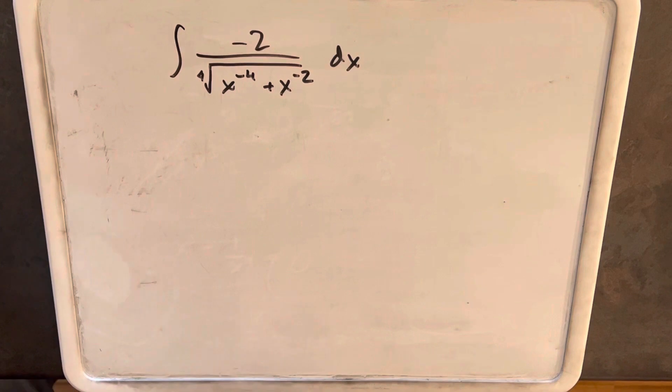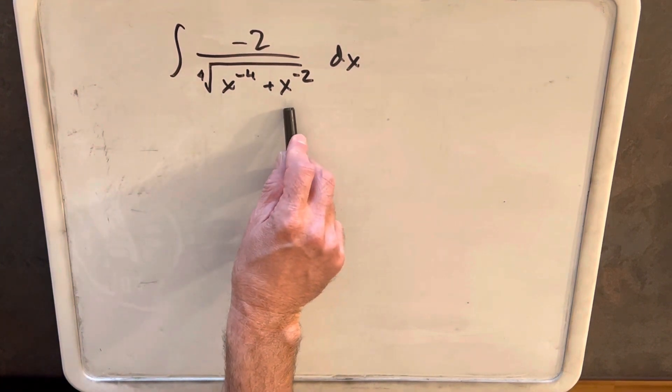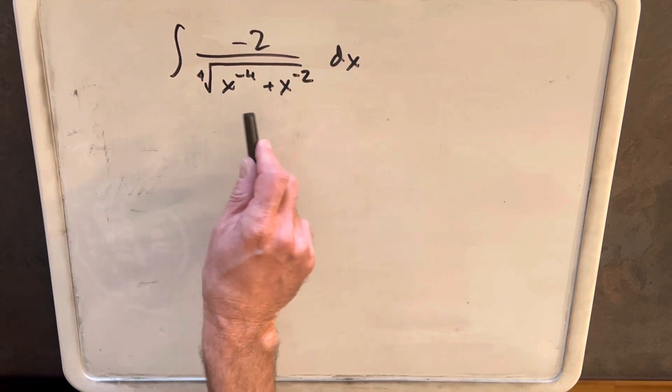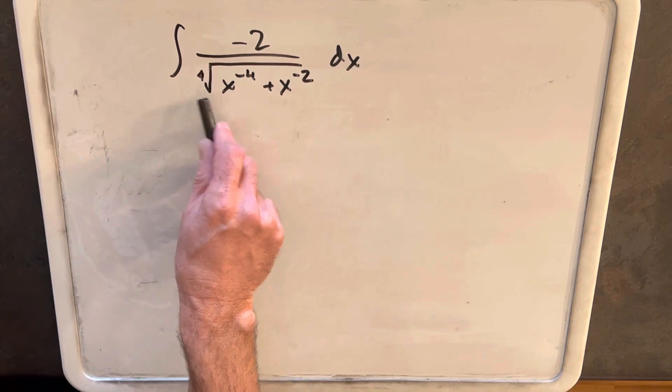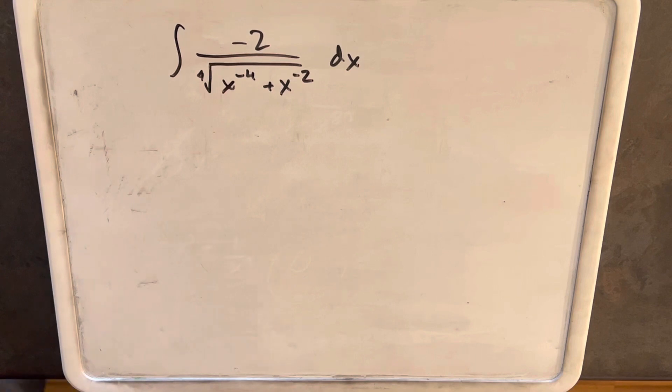So what I want to do is try factoring. I think there's two ways we could go about this: we could try to factor out the x to the minus 2, or try to factor out the x to the minus 4. Because this is a fourth root, let's try the x to the minus 4, I think that makes more sense.